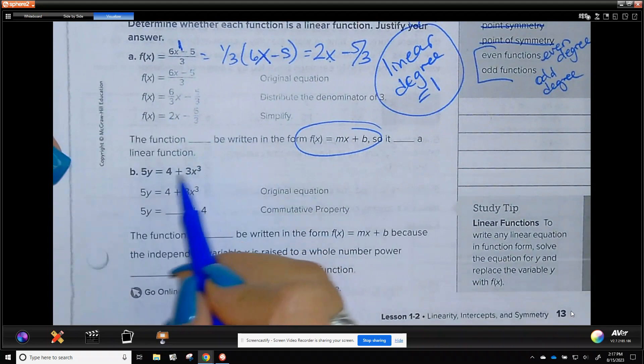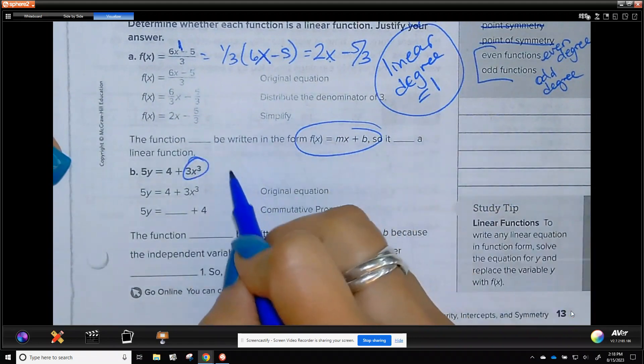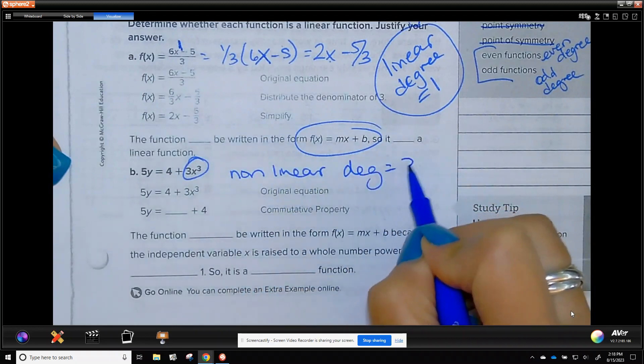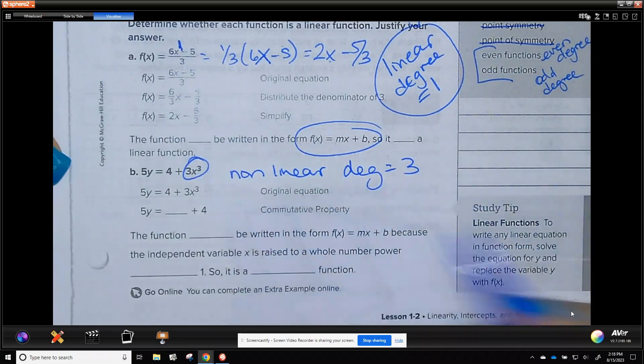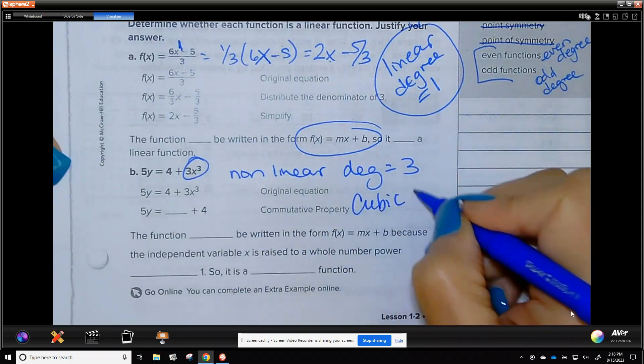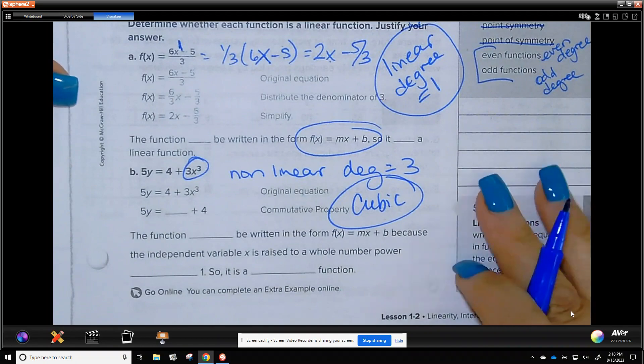So, looking at this, our highest power is 3. So, it is nonlinear, because it is not a 1. The degree equals 3. And just so you know, 3 dimensions is cube. A polynomial with a third degree is cubic. Second degree is quadratic. Third degree is cubic. Other than that, we just say polynomial.